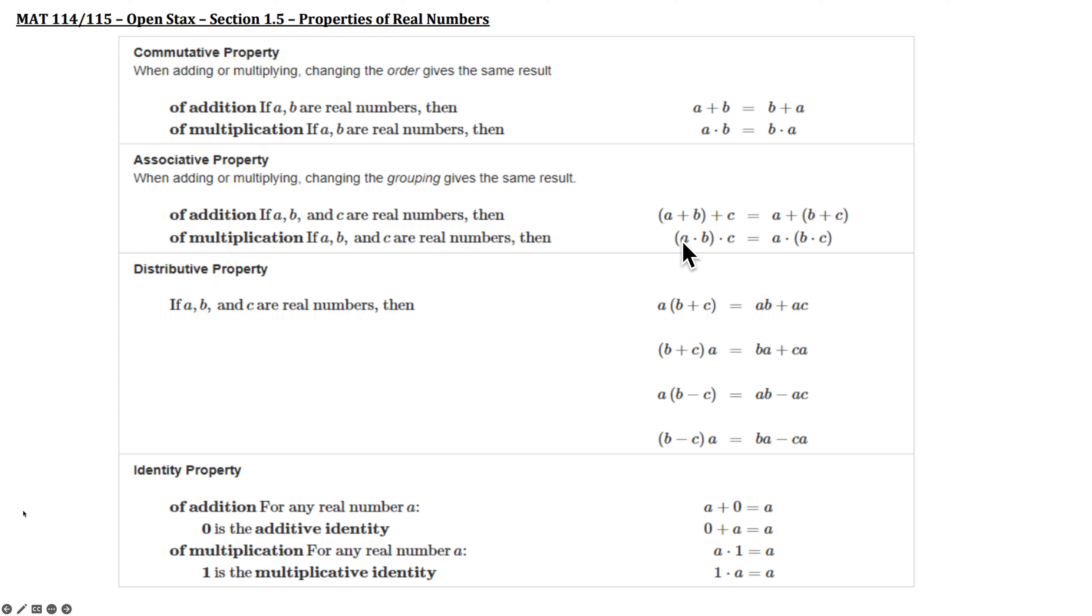And the same is true with multiplication. Everything's being multiplied. You have parentheses changing the orders in which you multiply. But the physical appearance of your numbers or variables do not change. Distributive property. You have A, B, and C. They're all real numbers. If you have A multiplied to a set of parentheses, you take the A and you multiply it both to the B and to the C, and you still add them. Now, the variable A or this number could be in the front of the parentheses or in the back. It still gives you the same thing.